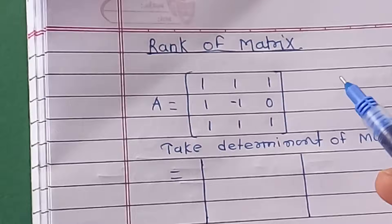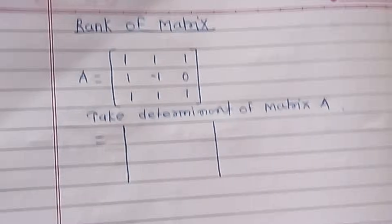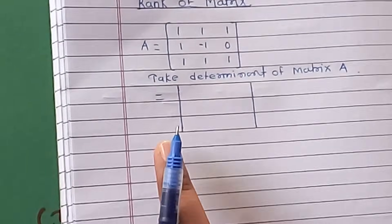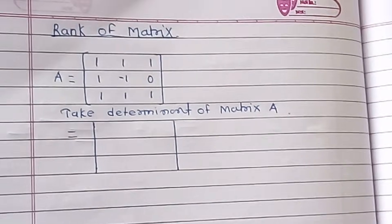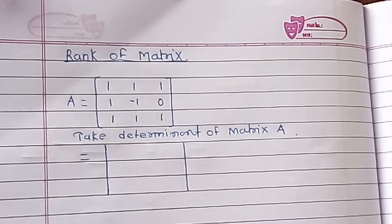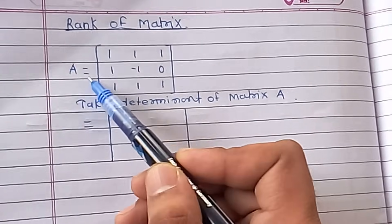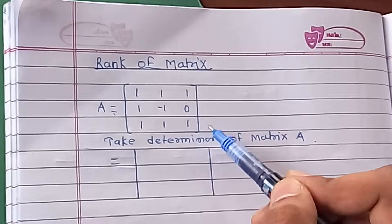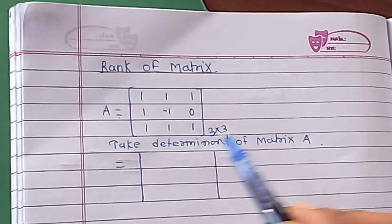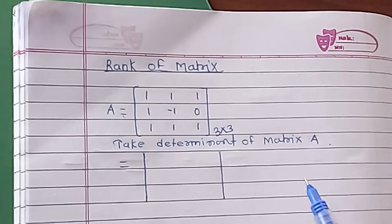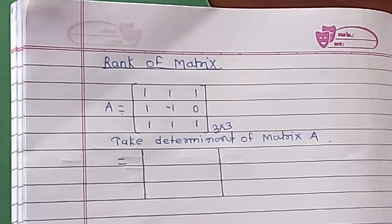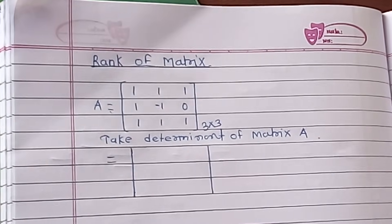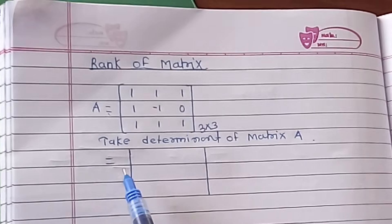This is the question regarding the rank of a matrix. This type of question is asked in the GATE exam for one mark. Consider matrix A — a 3x3 matrix with three rows and three columns. For finding out the rank of the matrix, this is the simplest method.